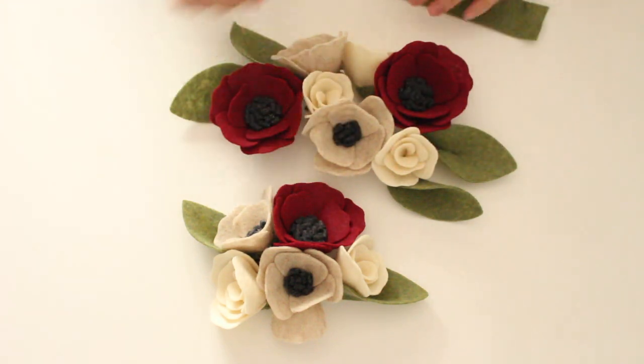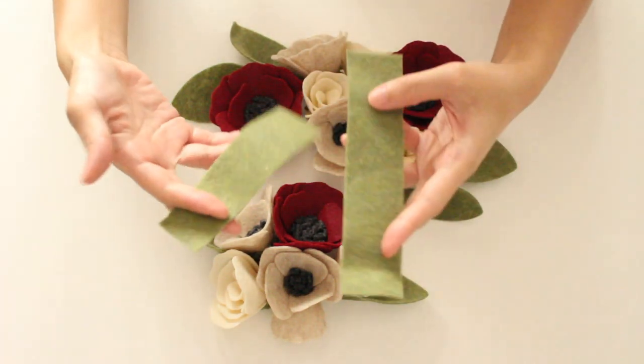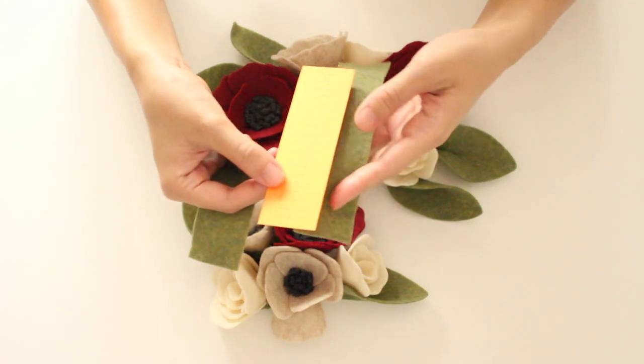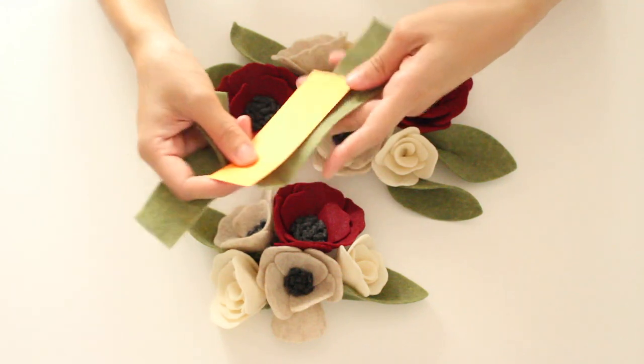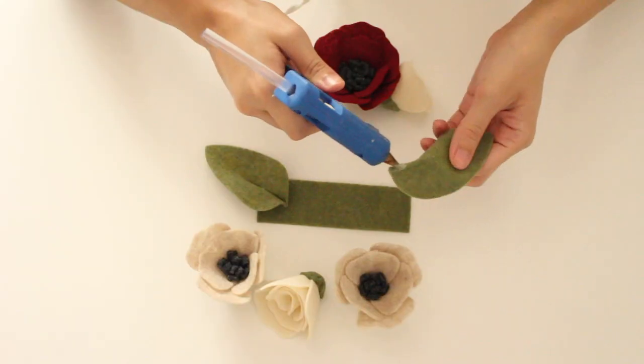Next, arrange your flowers and leaves. I cut a strip for each group and use the width of the strip template to measure the felt. Glue your pieces.